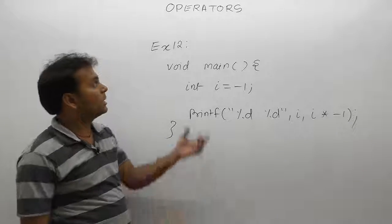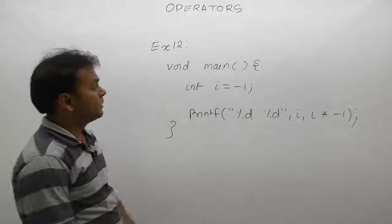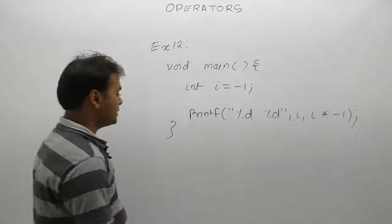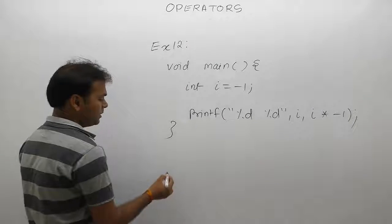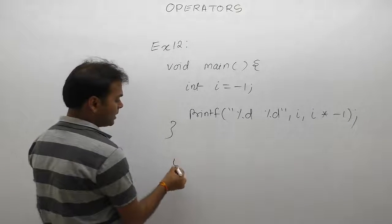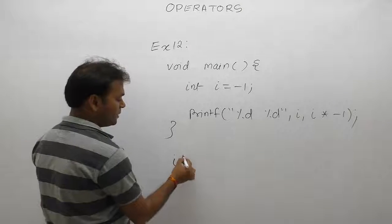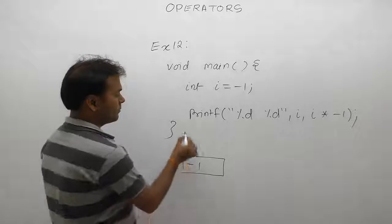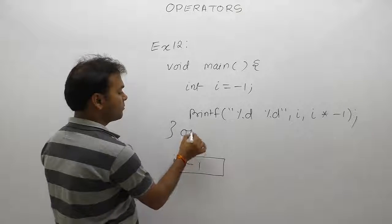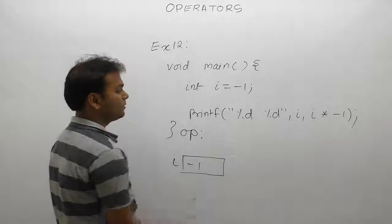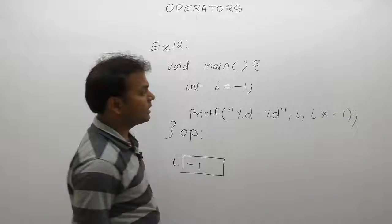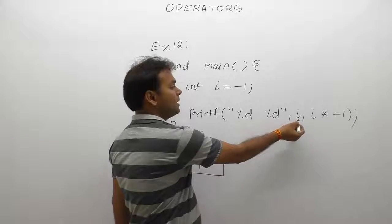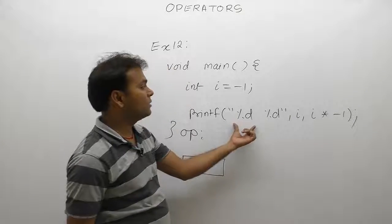One more example regarding unary minus. In this case, variable i is declared with the initial value minus one. What is the output of this example? First of all, simply display the value of i.